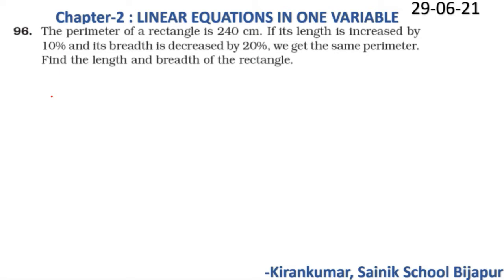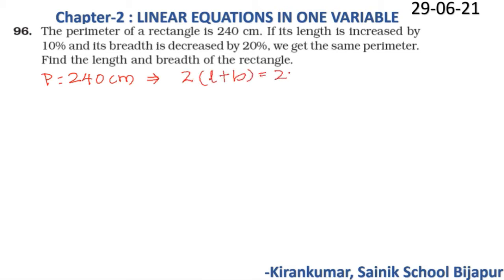Question 96: The perimeter of a rectangle is 240 centimeters. If its length is increased by 10% and its breadth decreased by 20%, we get the same perimeter. Find the length and breadth of the rectangle. As per the given question, the perimeter is 240 cm. For a rectangle, 2 times (length + breadth) equals the perimeter, so length plus breadth equals 120. Let us take the length as x, so the breadth will become 120 minus x.